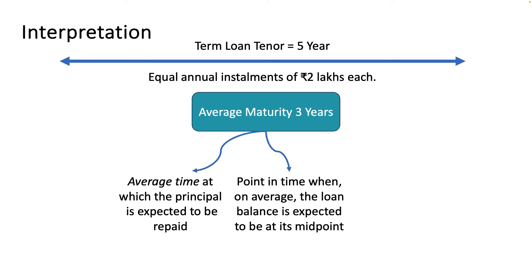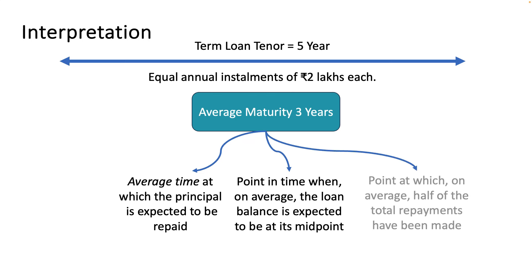So the average maturity of 3 years means that at the 3-year point this loan would have crossed its 50%. To put it simply, it is the point at which on average half of the total repayments have been made. We use the word 'average,' so it does not mean exactly 50% — it is on average.